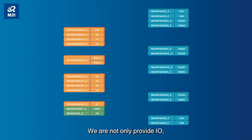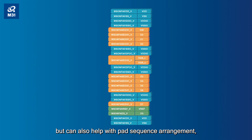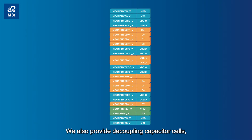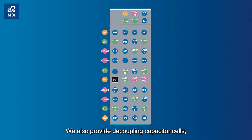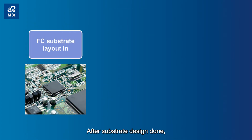We not only provide I/O, but can also help with pad sequence arrangement, bump arrangement, and substrate routing suggestions. We also provide decoupling capacitor cells, which can be easily combined with I/O to minimize AC noise on the power net.